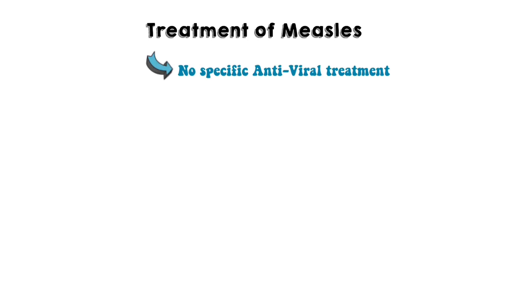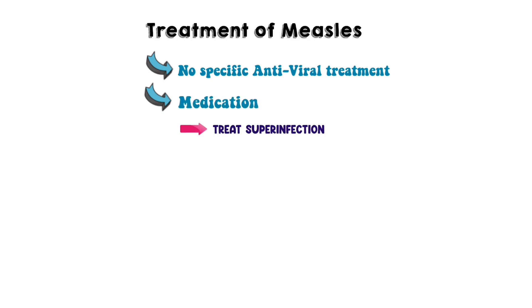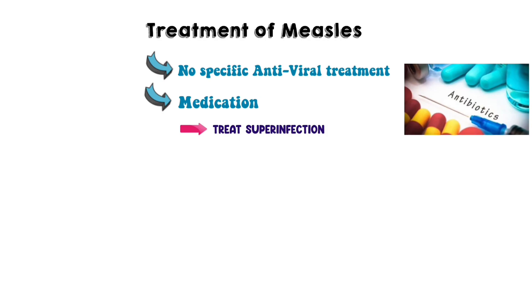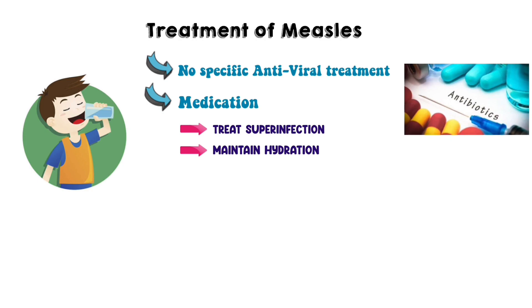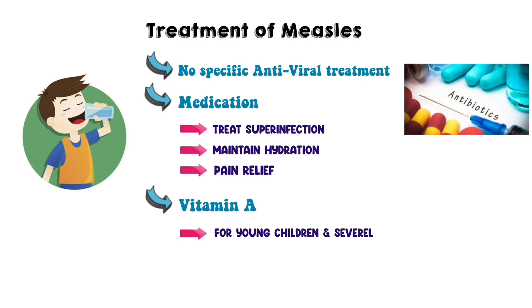For treatment, there is no specific antiviral treatment. Medications like antibiotics are used to treat superinfections. Other measures include maintaining hydration and pain relief. Vitamin A can also be prescribed for young children and the severely malnourished.